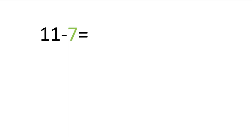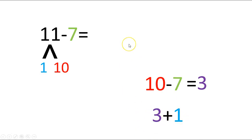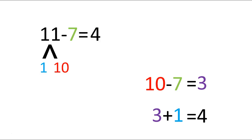Let's do this next one. Go ahead and push pause and then push play when you're done. Let's see if we got the same thing. I broke up the 11 by pulling out 1 and I had 10 left over. My first number sentence was 10 minus 7, and that equals 3. Then my next number sentence was 3 plus 1. 3 plus 1 equals 4. So 11 minus 7 equals 4.